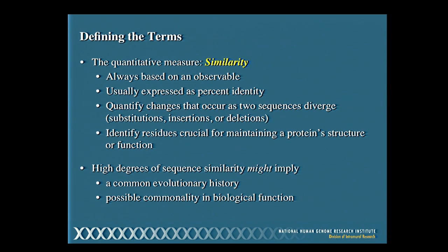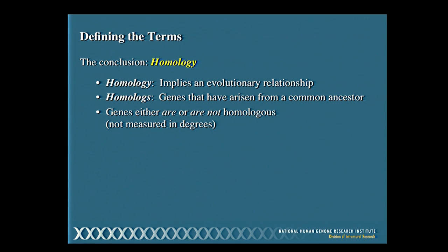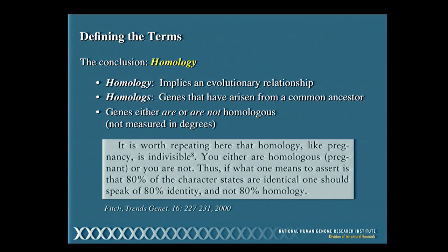The second term, most often misused, is homology. Homology is the conclusion we draw by looking at similarity — it implies an evolutionary relationship. When there is homology between sequences, those sequences are termed homologs: genes that have arisen from a common ancestor. Unlike similarity, which is quantifiable, homology is a conclusion. Either genes are or are not homologous — we don't measure this in degrees. As Walter Fitch, one of the grandfathers of bioinformatics, said: 'Homology, like pregnancy, is indivisible. You're either homologous or you are not.'